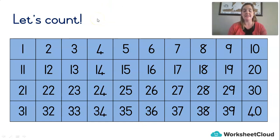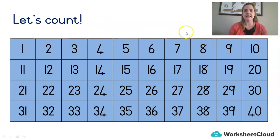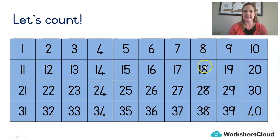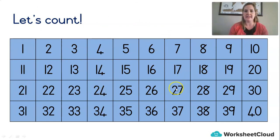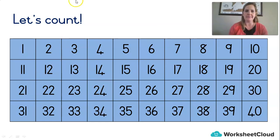How about in threes? We'll stop at 30: 3, 6, 9, 12, 15, 18, 21, 24, 27, 30. Awesome!